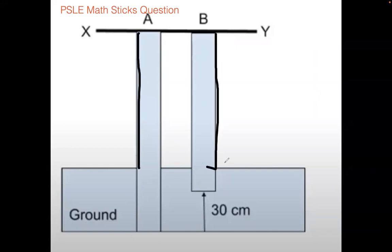And it says that one-third of A is below ground and one-eighth of B is below ground. And the length of A is 30 more than the length of B.